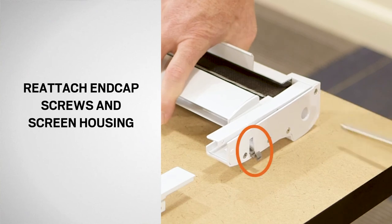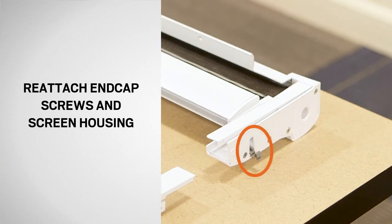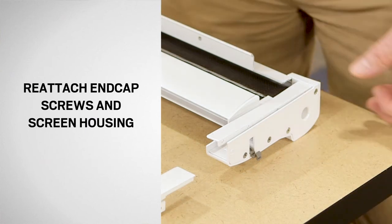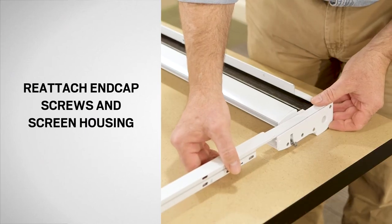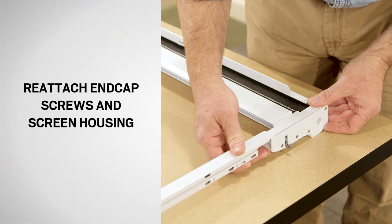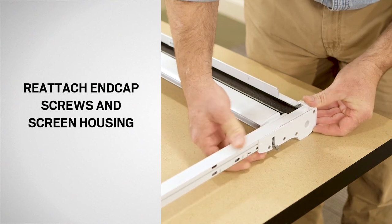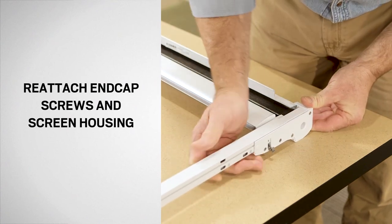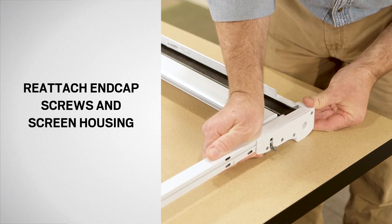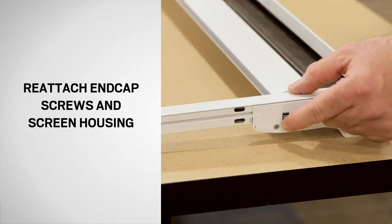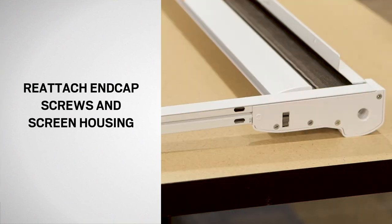Confirm that the fastener clip on end cap C is in the open position. Slide the tab on end cap C into the screen track. Make sure you use the same configuration noted earlier. Rotate the fastener clip up until it snaps into the closed position.